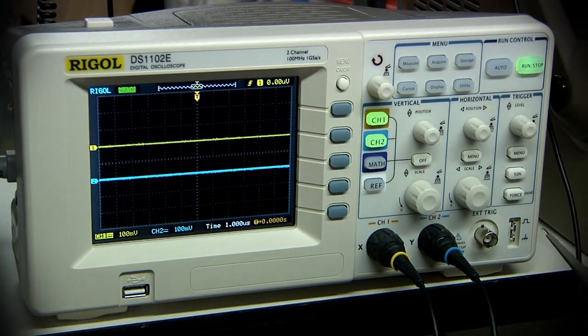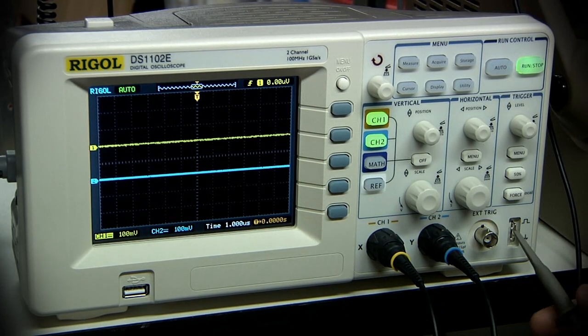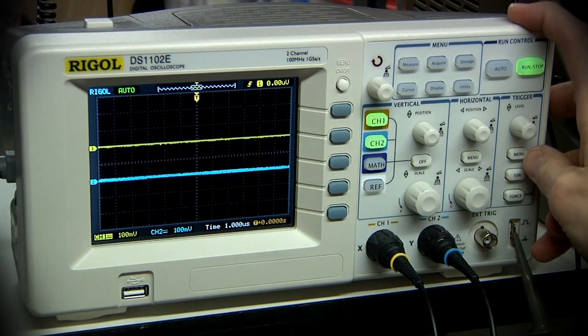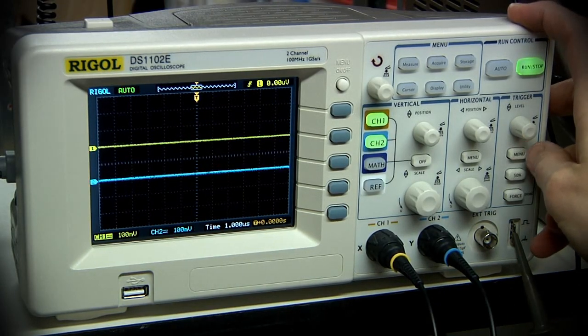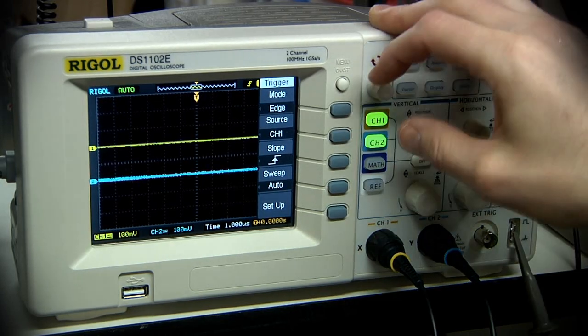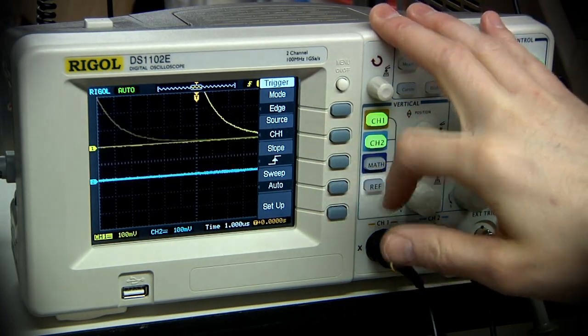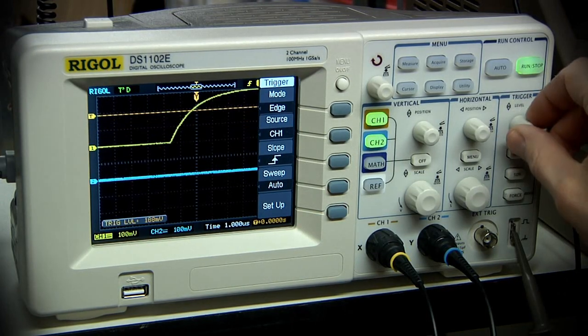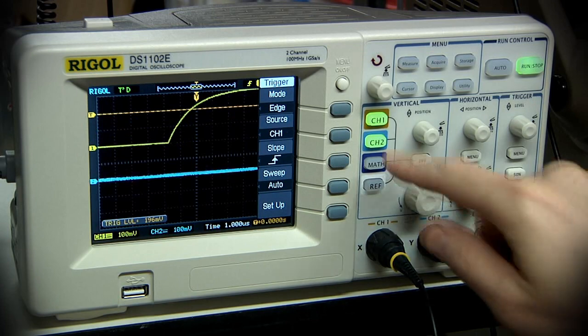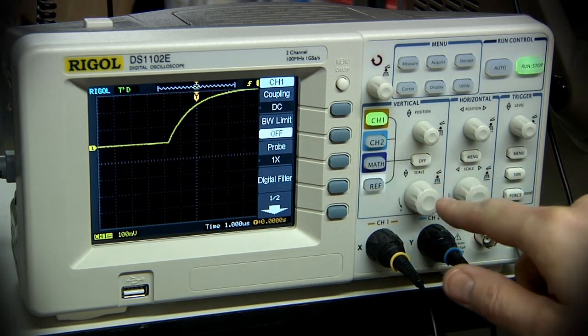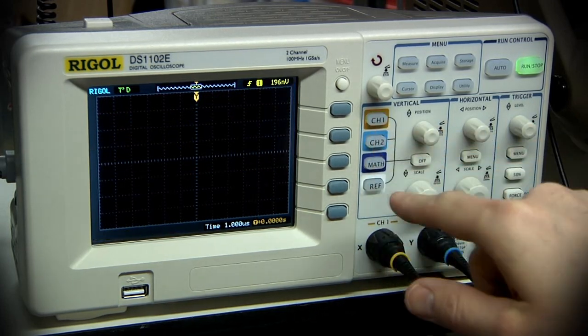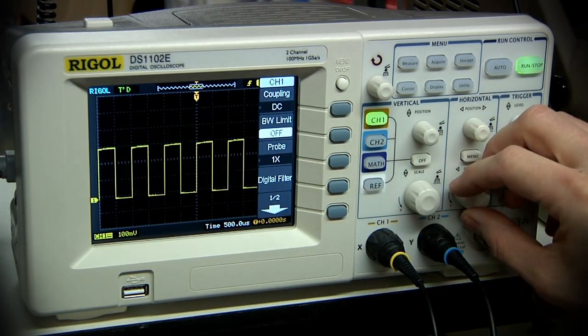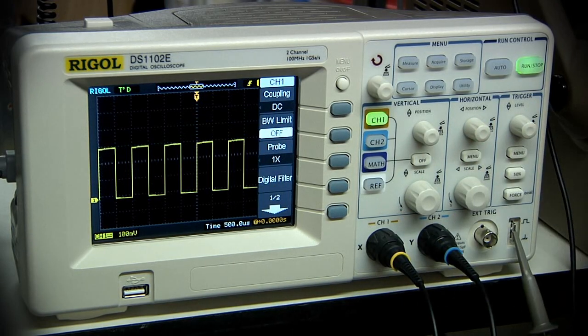They have probe compensation adjustment. And they do give you the tool for that in the probe package. So, let's hook one of these up to the test input and see if we can figure out how to get it to trigger. Source channel 1. Looks like it should be. There we go. Just have to set the trigger level. Going to shut off channel 2 for now. Go back to channel 1. So there we go. There's channel 1 functional.